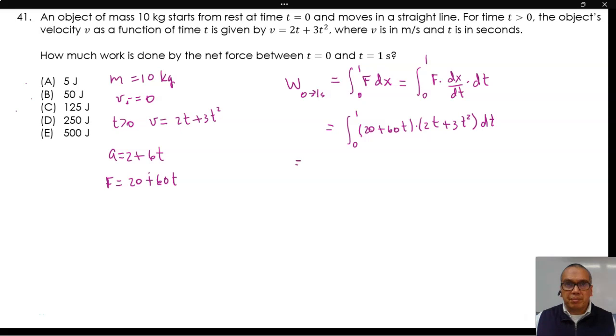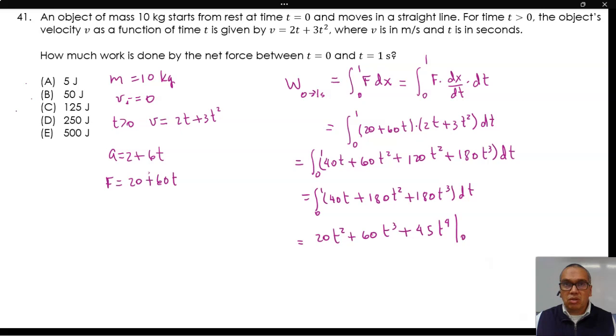We must do a little algebra. 40t plus 60t squared plus 120t squared plus 180t cubed dt, or 40t plus 180t squared plus 180t cubed dt, which is equal to 20t squared plus 60t cubed plus 45t to the fourth power, from 0 to 1.